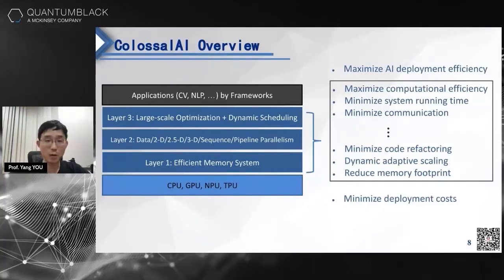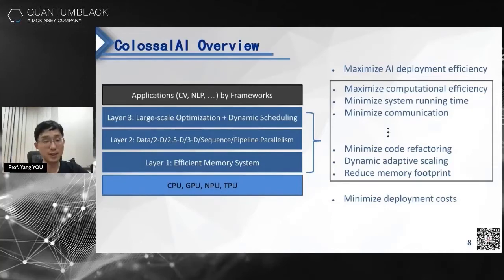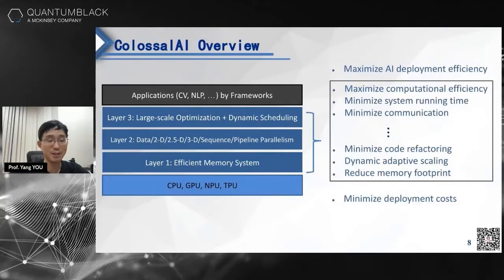For example, without Colossal AI, a team of 10 experts would probably spend three months to deploy distributed AI models. With Colossal AI, even one data scientist can deploy huge AI models in just one hour. We are still updating our system and software, and it will become much better in the next year.